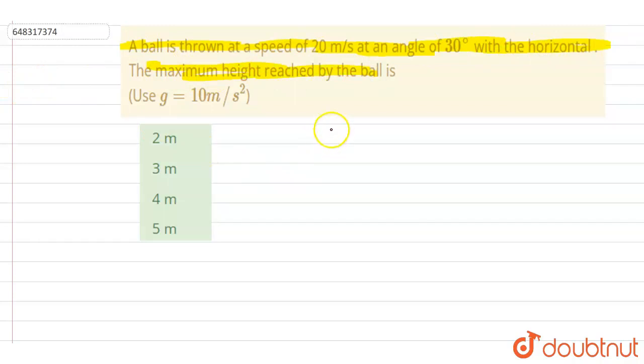So if I write down the maximum height, it is u squared sine squared theta by 2g. So you can just put the value.